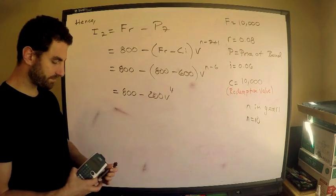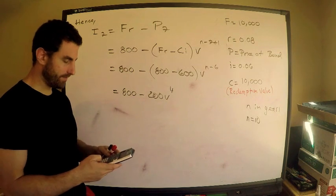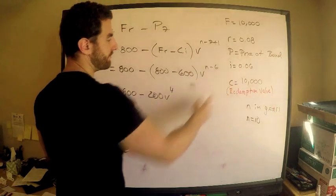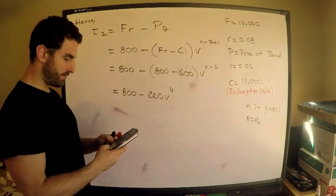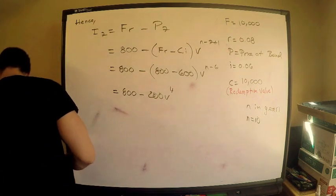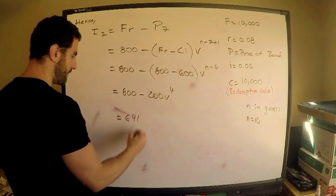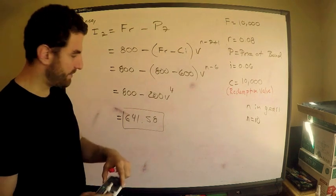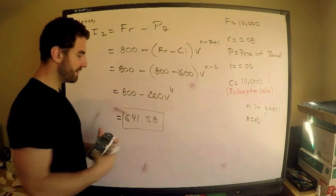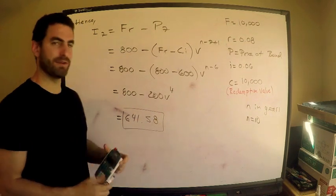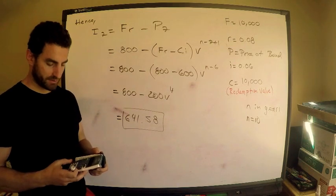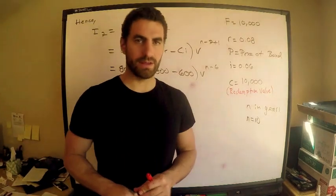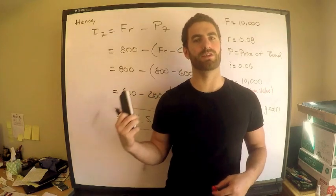So computing this: 800 minus 200 times (1.06) to the negative 4, this gives me approximately 641.58. I have a little difficulty determining exactly how they want you to round, but regardless that takes care of the question. See if you can answer it the other way using the SOA method. Thank you for subscribing, and please comment if you want me to cover this material in general.